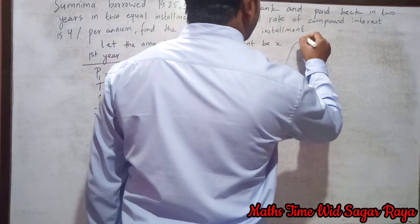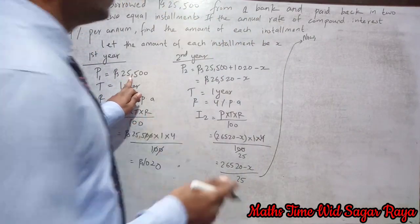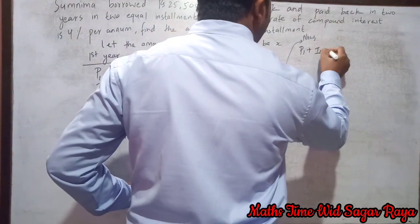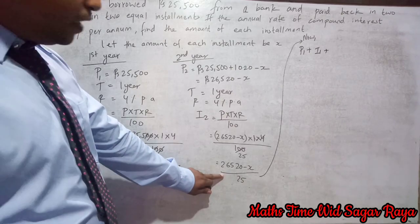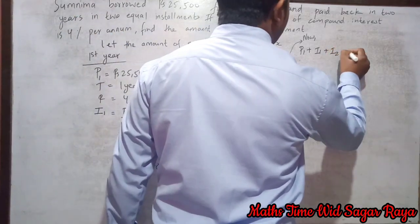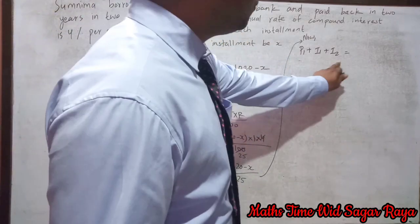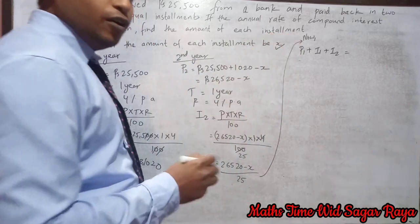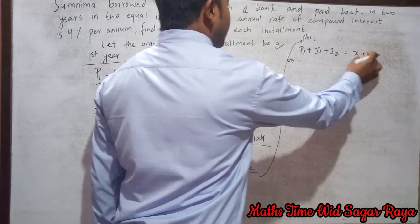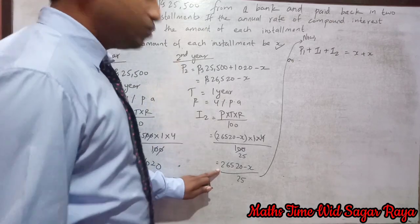Now in two installments we have to pay the principal for the first year, the interest for the first year, and the interest for the second year. All of these together must equal two installments. One installment is x, so two installments will be 2x.